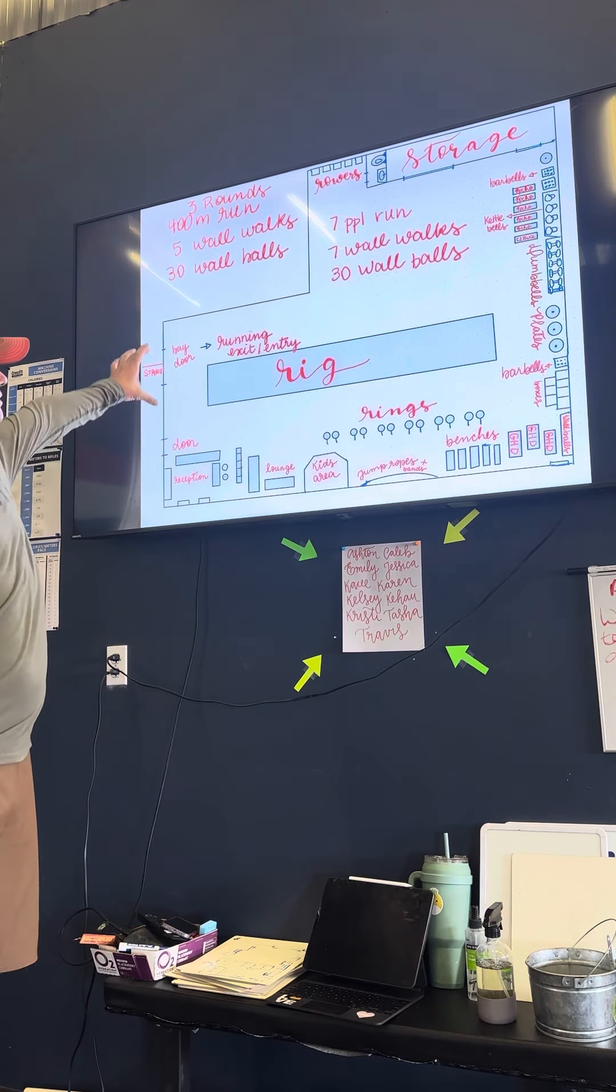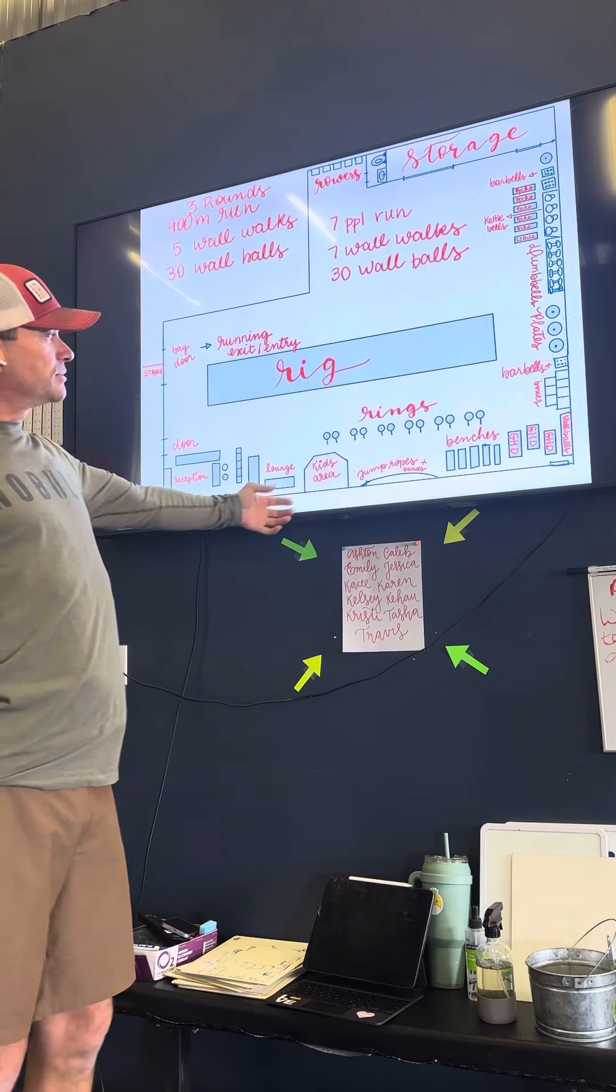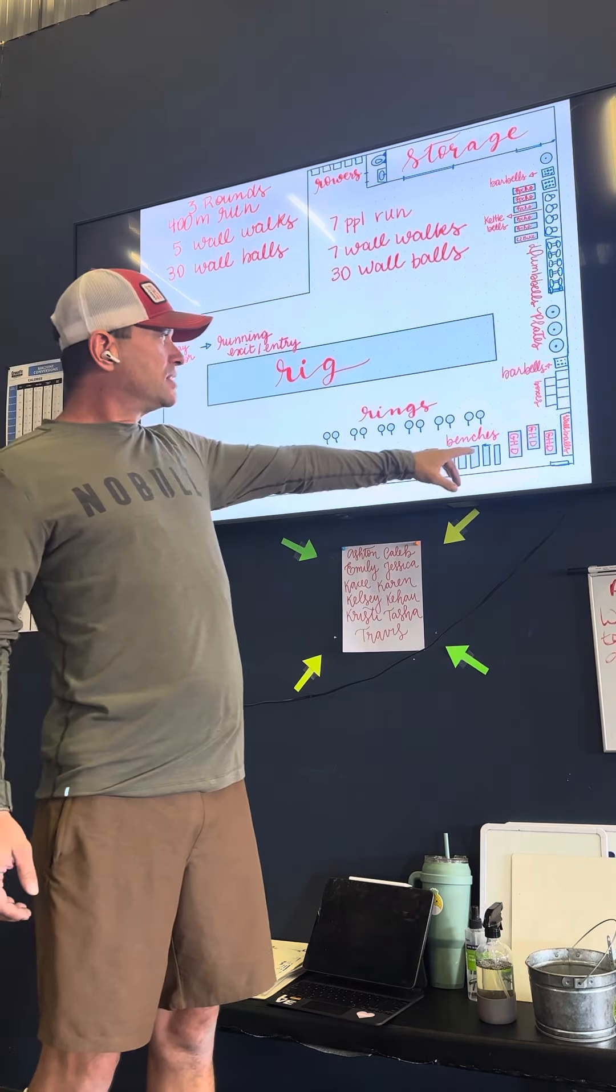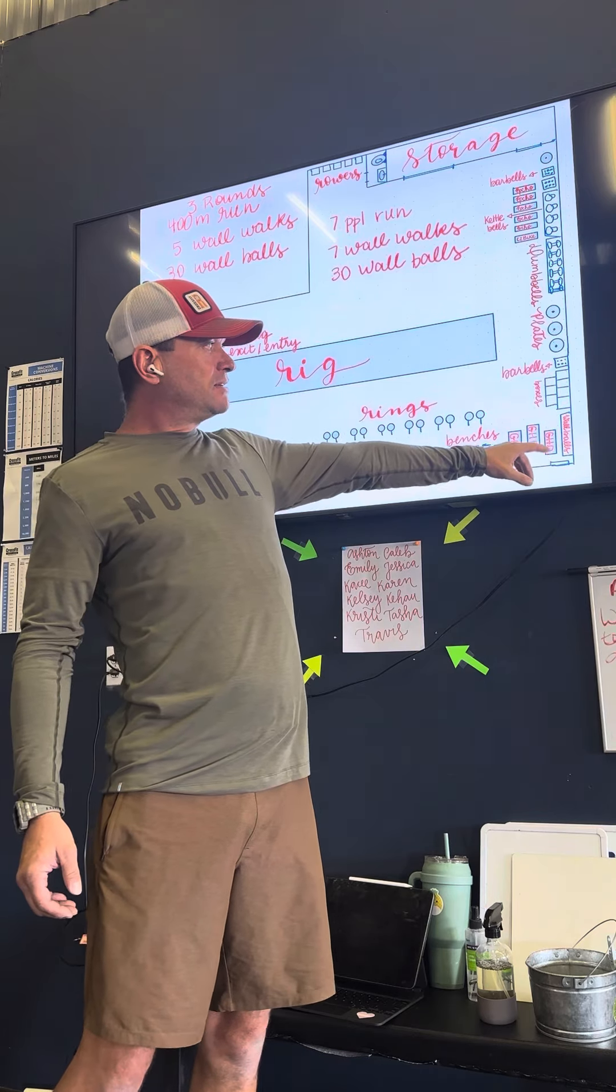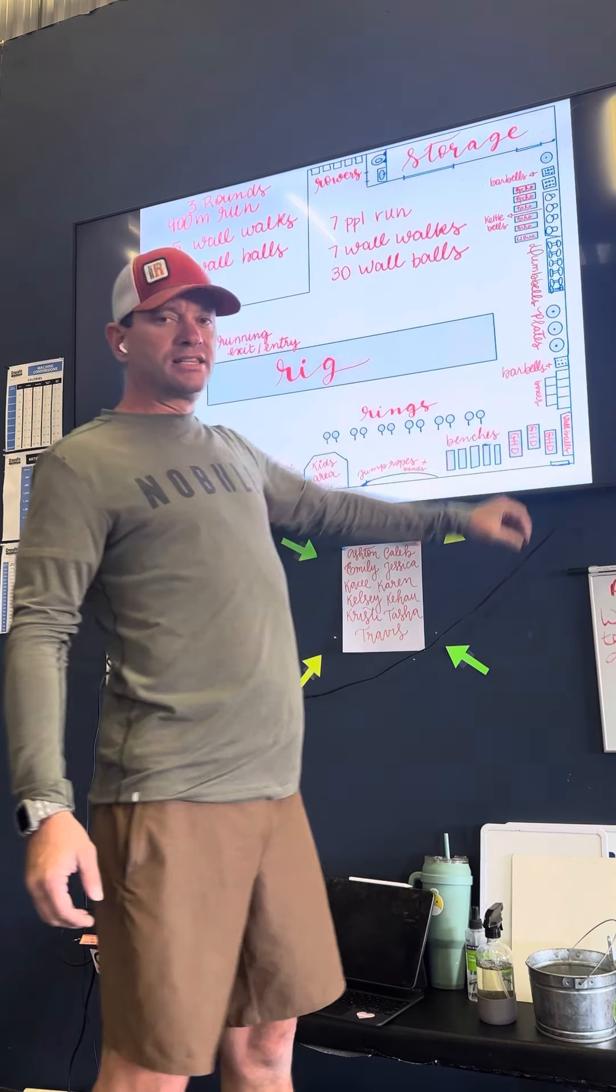Here we have our entry door and we have a bay door. We have our reception lounge for our kids area. We have wraps and bands hanging on the wall. This is where we park our benches. We have some kettlebells here, the wall, and our boxes in the corner.